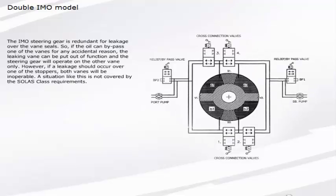The IMO steering gear is redundant for leakage over the vane. If the oil can bypass one of the vanes for any accidental reason, the leaking vane can be put out of function and the steering gear will operate on the other vane only. However, if a leakage should occur over one of the stoppers, both vanes will be inoperable. A situation like this is not covered by the SOLAS class requirements.